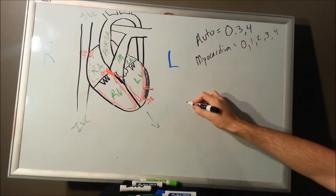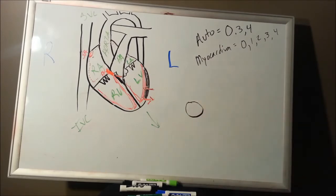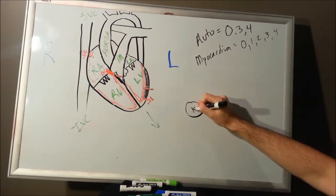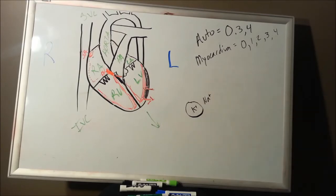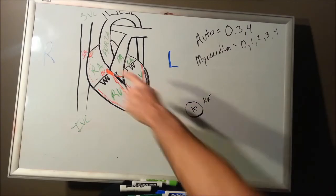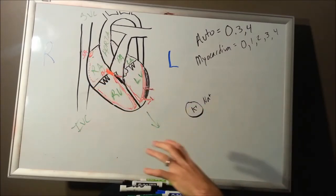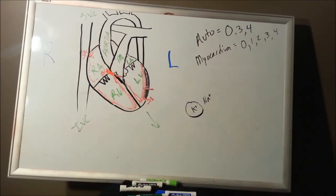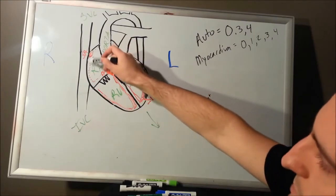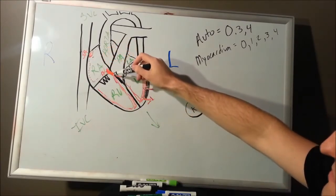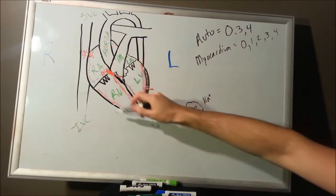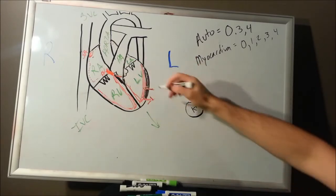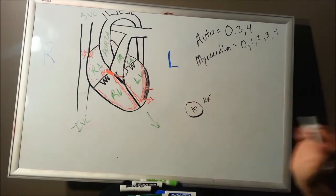We're going to start with the cell. The cell is going to have potassium inside and sodium outside. Your SA node had those funny channels — it creates an action potential, it depolarizes. That action potential propagates down through the AV node, through the bundle of His, through the bundle branches, through the Purkinje fibers, and eventually reaches our destination: the myocardium.